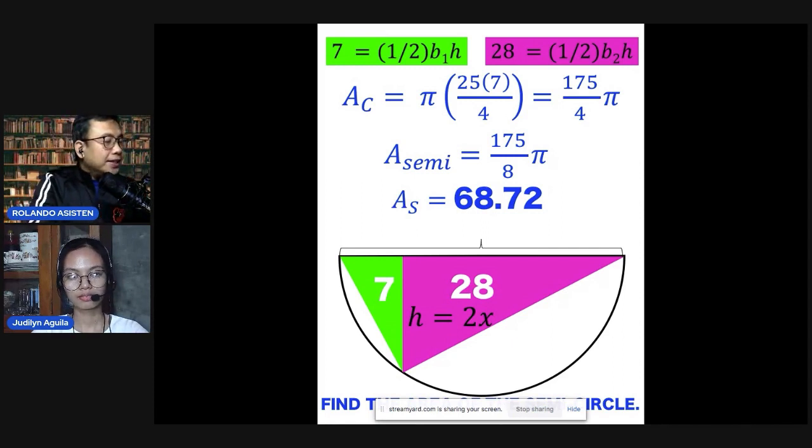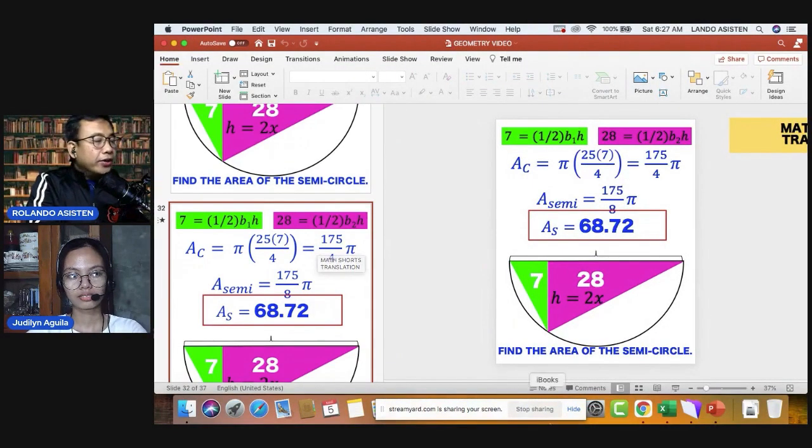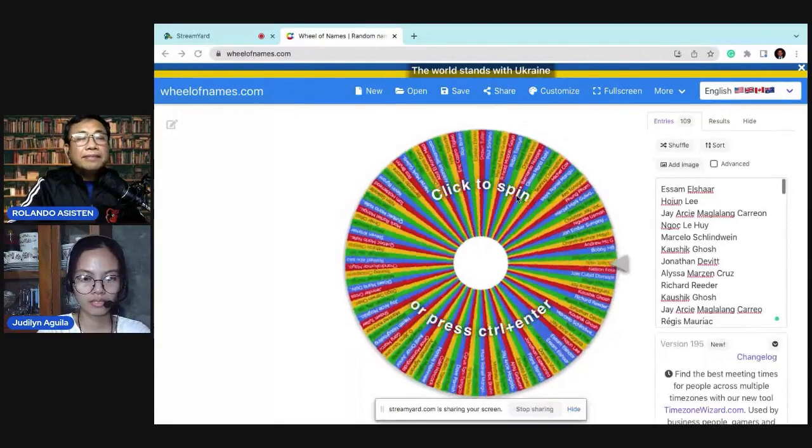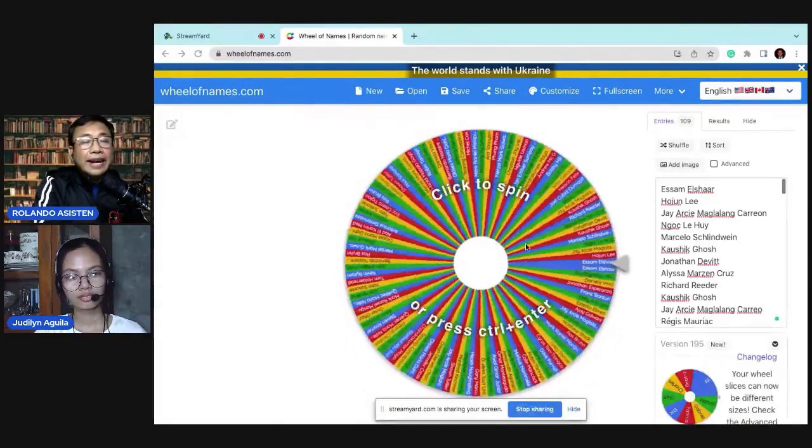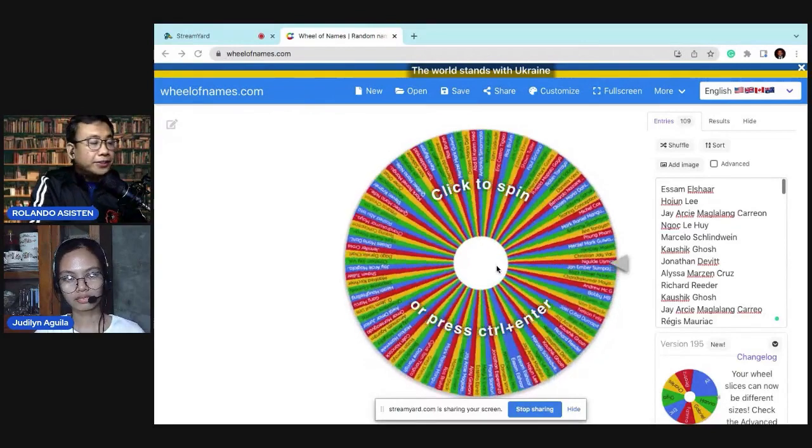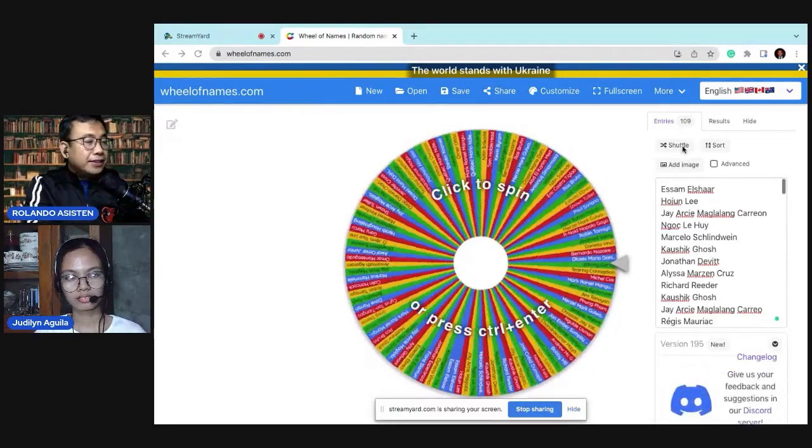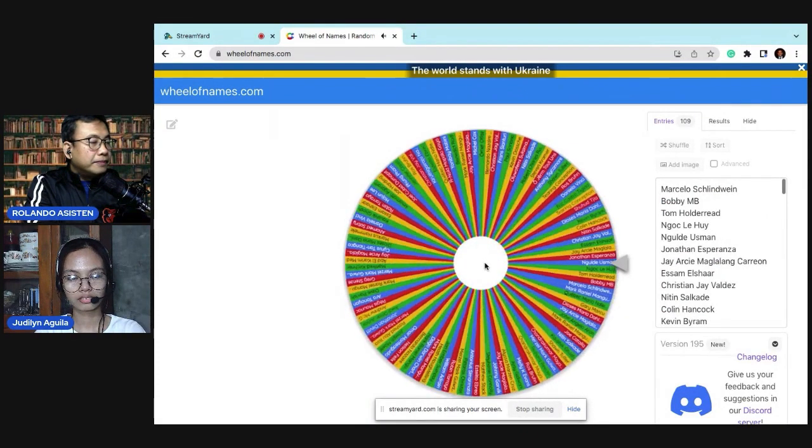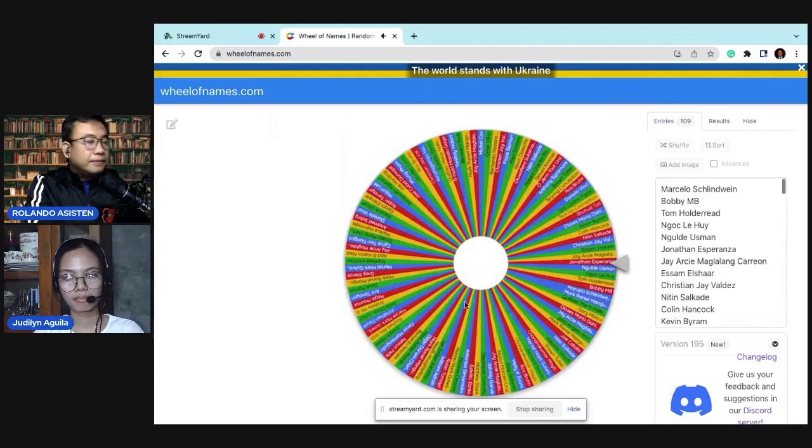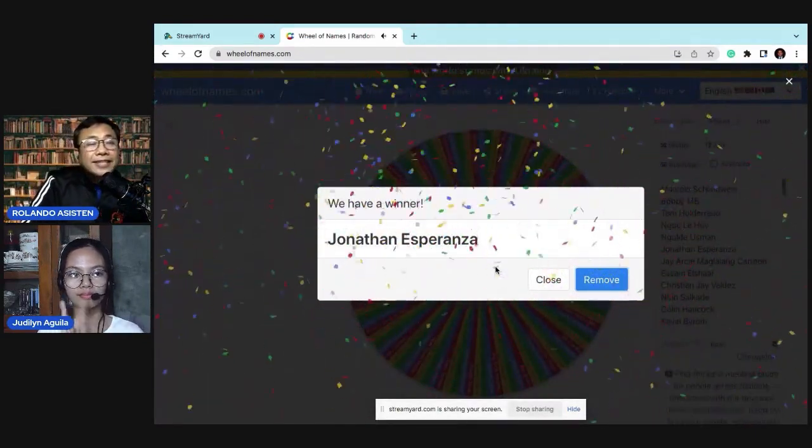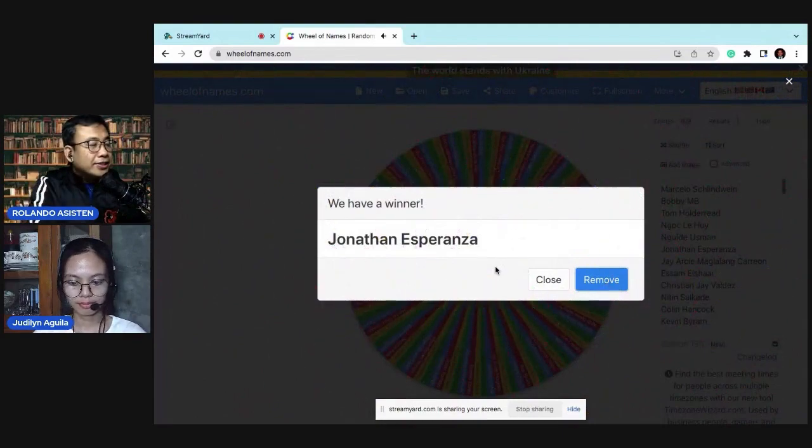Now, let's proceed to the next question. But before that, we are going to raffle the first winner from the puzzle of the week last week. We have 109 names in this spinner, so we are going to raffle now the first. Let's select the first. So let's randomize it. And here is the first winner. Jonathan Esperanza. So congratulations, Sir Jonathan Esperanza. You won 500 pesos.